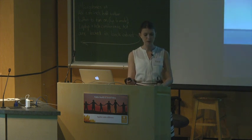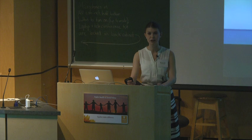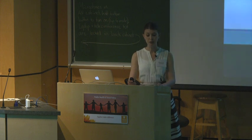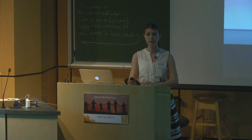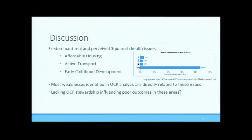The most interesting findings for me were the discrepancies between policy and real health issues in Squamish. Affordable housing, active transportation, and early childhood development were by far the three biggest issues I identified for the Squamish community. And if we remember back to the findings slide, policy for housing, transportation, and children, youth, and families were found to be considerably lacking throughout the OCP.